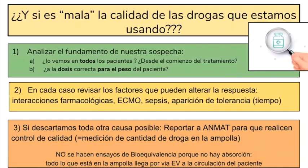En la práctica quedó la costumbre en Argentina de sospechar de la calidad de las drogas. Primero hay que analizar el fundamento de esa sospecha: ¿nos pasó con todos los pacientes? ¿Desde el comienzo le dimos el relajante y no paraba de moverse? ¿Le dimos el sedante y estaba despierto? Hay una confusión a veces al evaluar eficacia de sedantes: puede estar en RAS -5 pero si se mueve, sospechan que no está bien sedado. El sedante no produce parálisis, ni el relajante produce sedación — son dos efectos diferentes. Por eso la idea de estos ateneos es analizarlo con tranquilidad para tomar mejores decisiones.